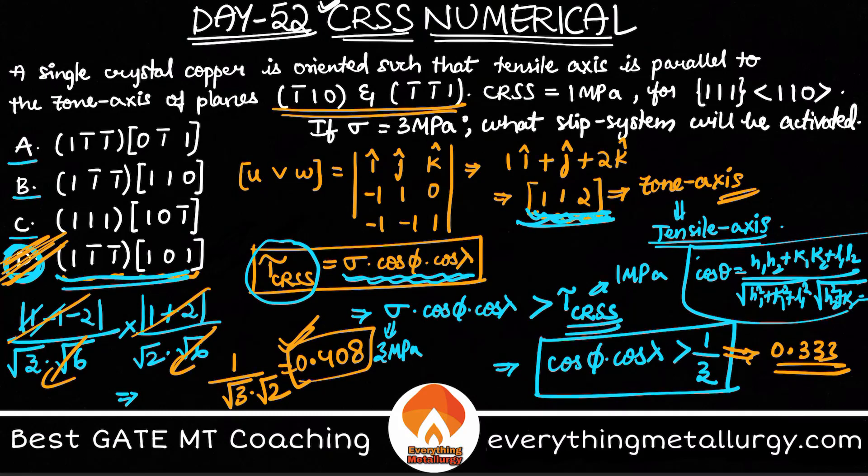This is how you go about this problem. We didn't know the tensile axis, but the given information was that the tensile axis is parallel to the zone axis. We calculated the zone axis from the two planes, then used the CRSS formula. CRSS is the minimum stress required in a particular slip system, so we made an inequality. From there, we generated that the Schmid factor (cos φ cos λ) must be greater than 1 by 3.